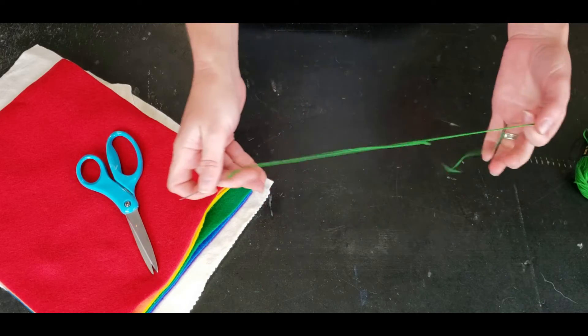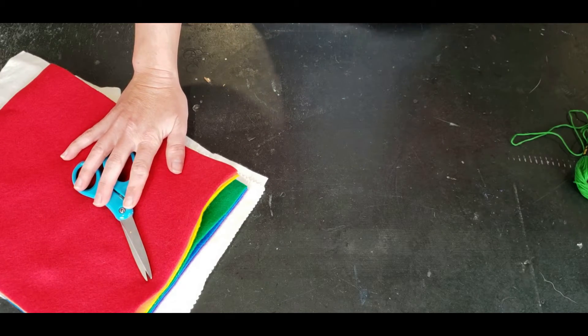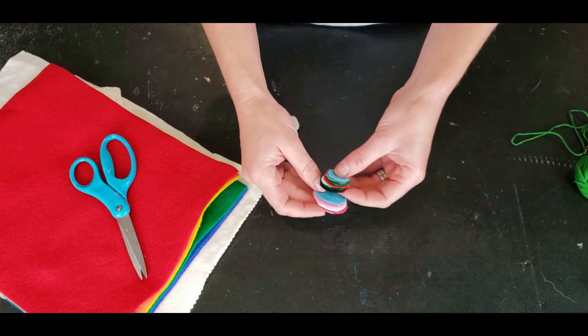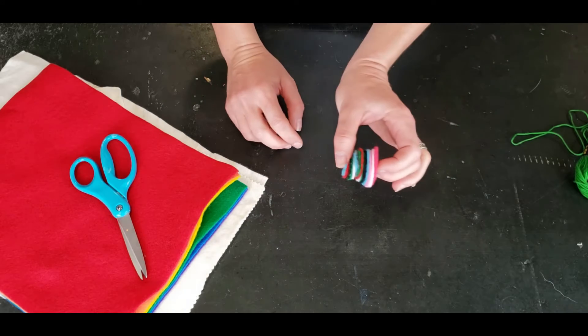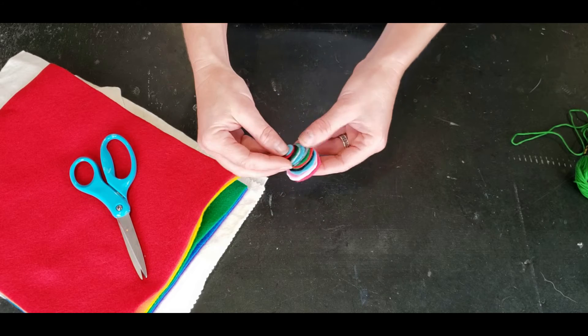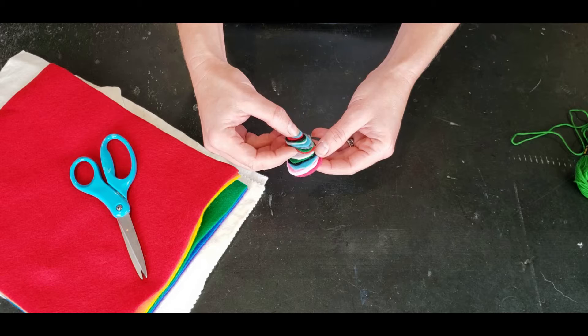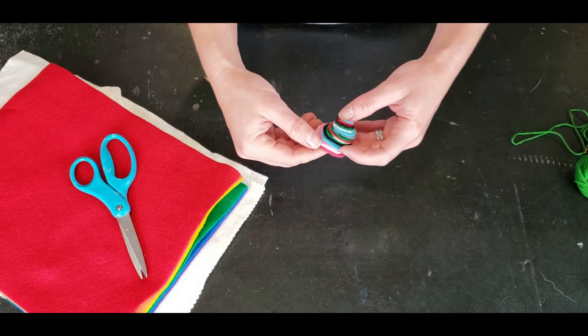Ask your adult helper if you need help threading your needle. To get started, we're going to create a little stack of felt circles that progressively get smaller in size as you go up, or if you prefer to think of it, larger in size as you go down.